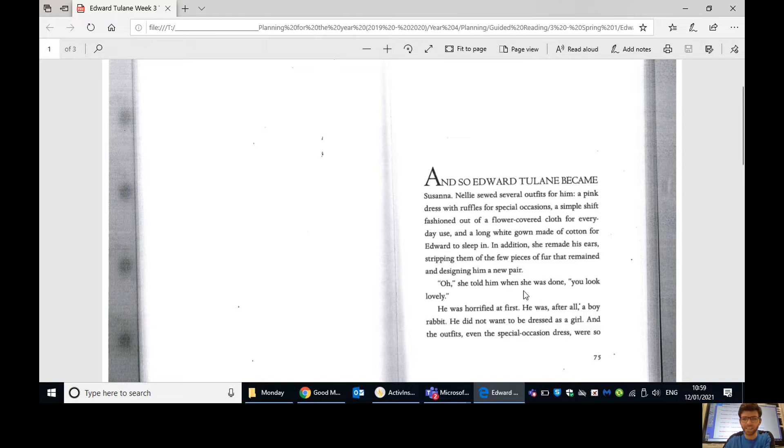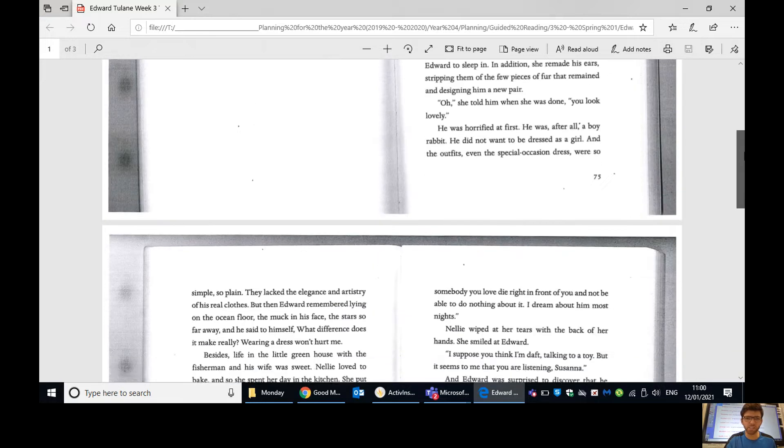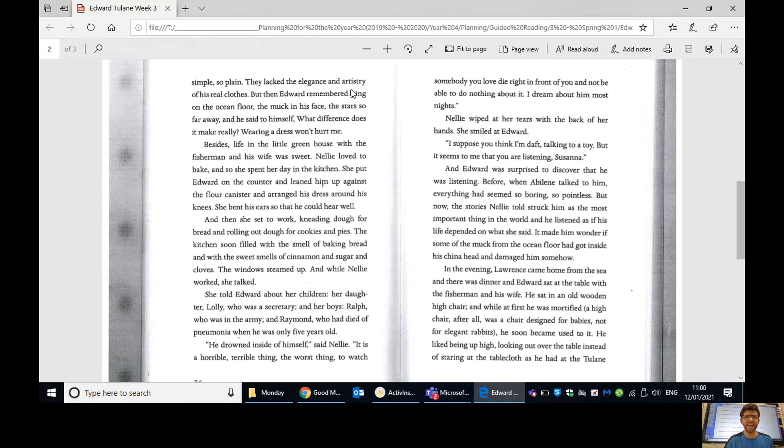So he's being dressed up like a girl. I wonder what he thinks of that. Oh, she told him when she was done, you look lovely. He was horrified at first. He was, after all, a boy rabbit. He did not want to be dressed as a girl. And the outfits, even the special occasion dress, was so simple, so plain. They lacked the elegance and artistry of his real clothes. So they lacked, it means they had no elegance, so they weren't beautiful clothes. But then Edward remembered lying on the ocean floor, the muck on his face, the stars so far away. And he said to himself, what difference does it make, really? Wearing a dress won't hurt me. Besides, life in the little green house with the fisherman and his wife was sweet.